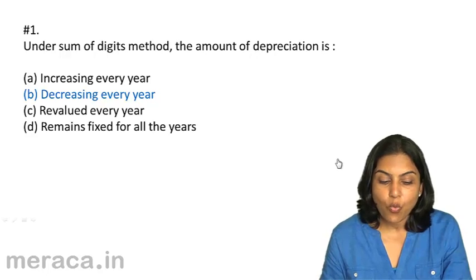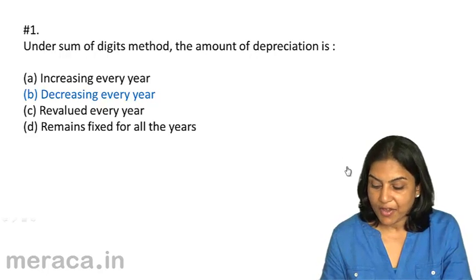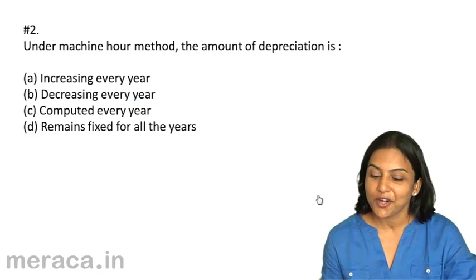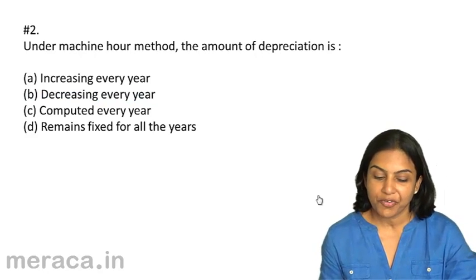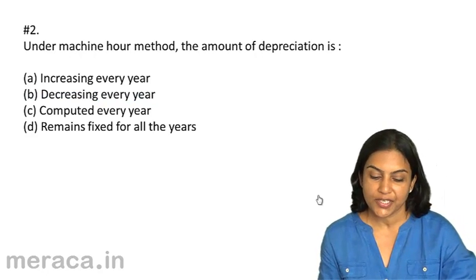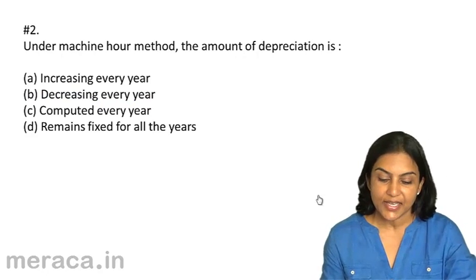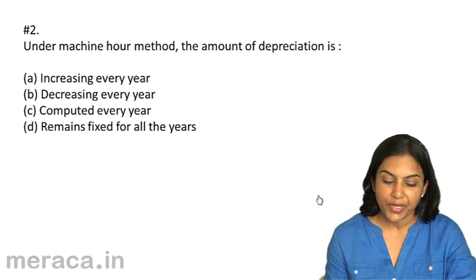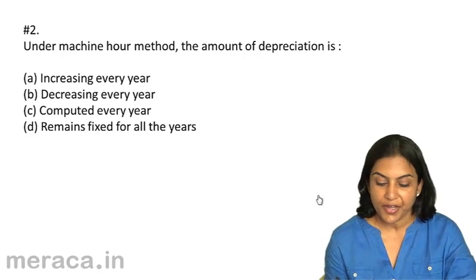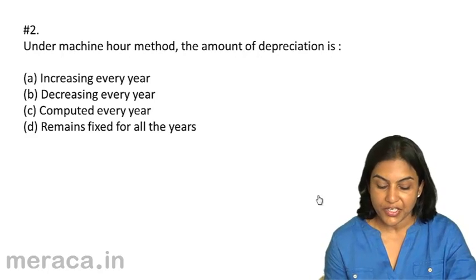The correct answer is 1B — decreasing every year. Next, under the machine hour method, the amount of depreciation is: A, increasing every year; B, decreasing every year; C, computed every year; D, remains fixed for all the years.